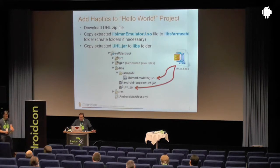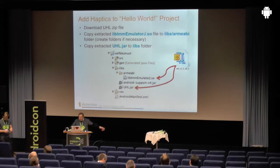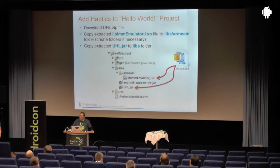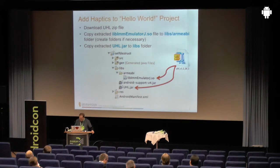If you're on a device where the manufacturer has licensed our hardware, the library will use that. Otherwise, it will just use what's there and emulate the rest. Our library works on every Android device from 2.1 onward, except the really cheap ones that don't have an actuator, like the Kindle for example.